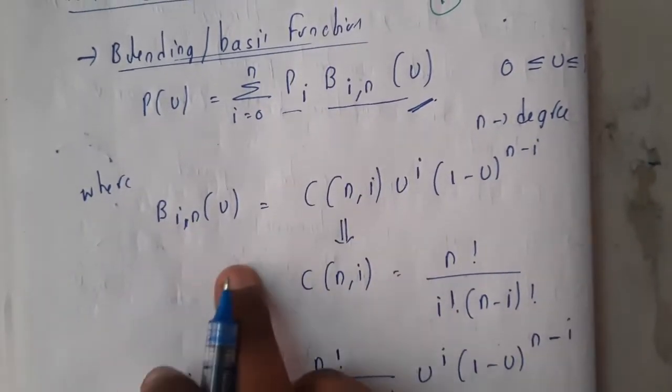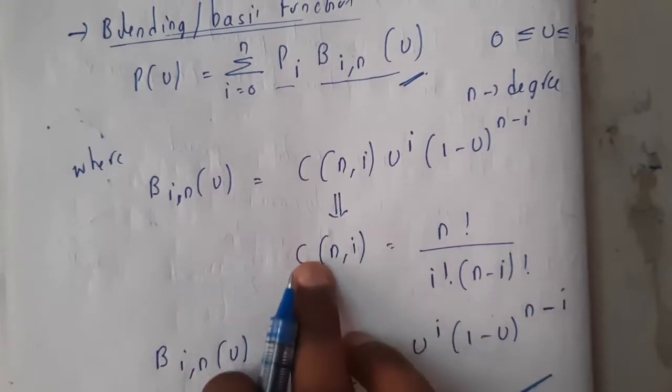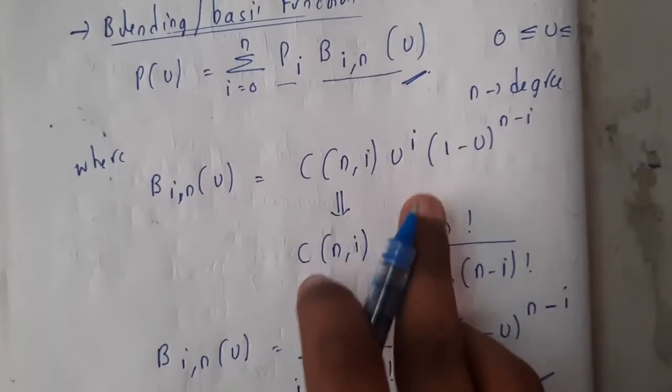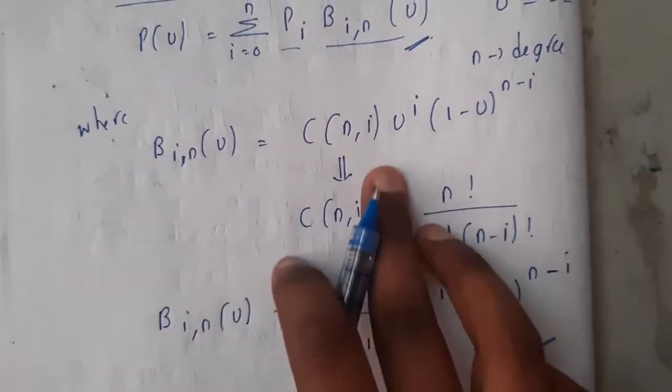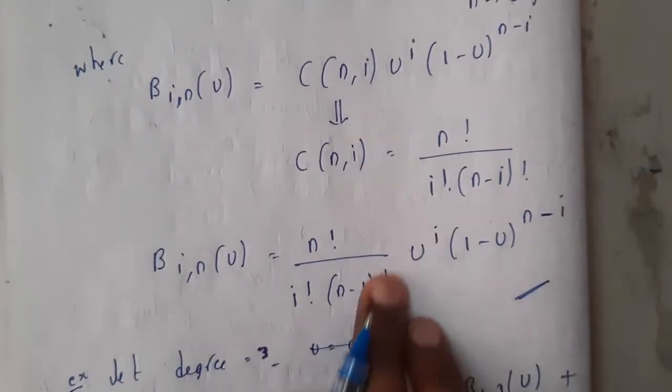Here you may ask me what is this P_i, what is this B_i. So B_{i,n}(u) equals C(n,i), that is combinations of n comma i, times u to the power i times (1-u) to the power (n-i). This combinations of n comma i can be written as n factorial by i factorial into n minus i factorial.